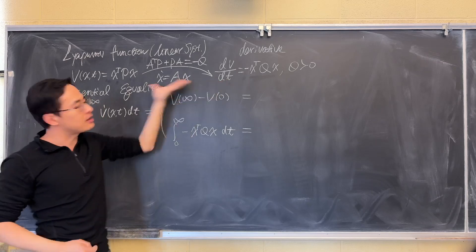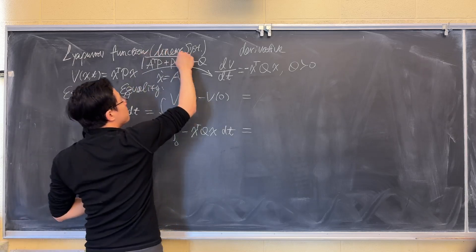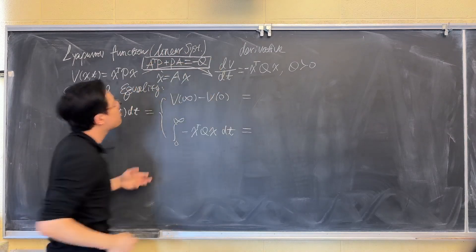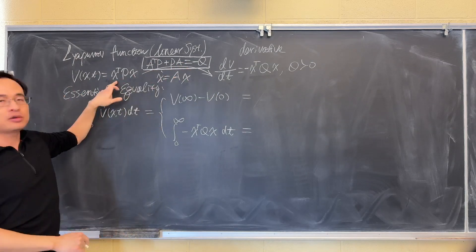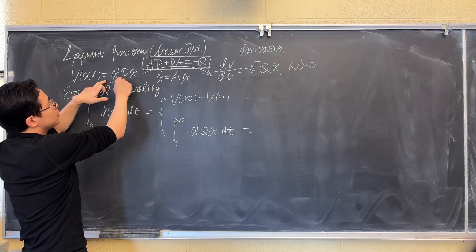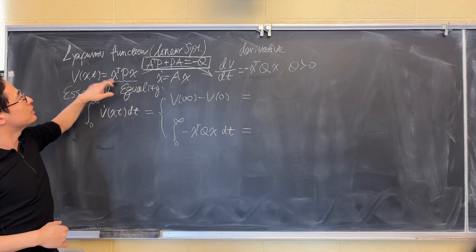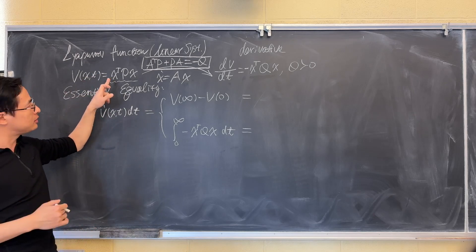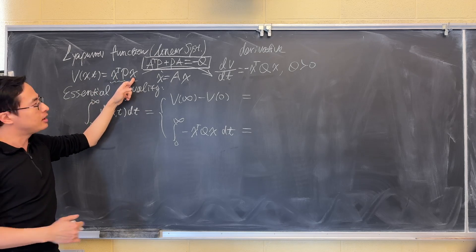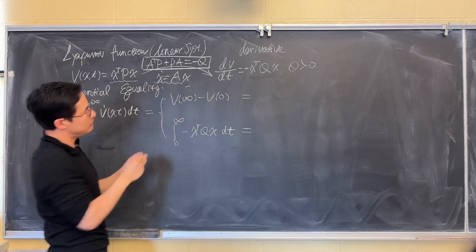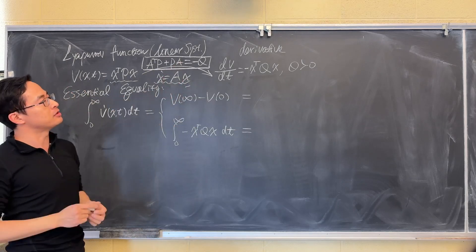And the way that these two are connected is by this Lyapunov equation: A transpose P plus PA equals negative Q. And this matrix equality equation, if you just take the derivative from here, apply chain rule to the Lyapunov candidate, then you can make a connection. You will be taking the derivative of X transpose P X, and then substituting in this system dynamics, you will be able to derive the Lyapunov equation. That's the connection.